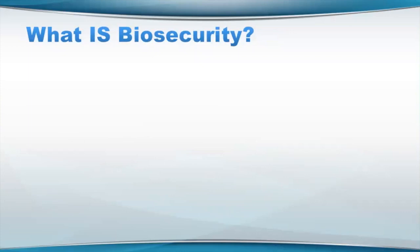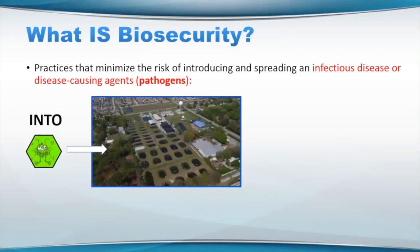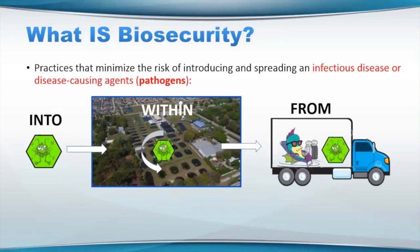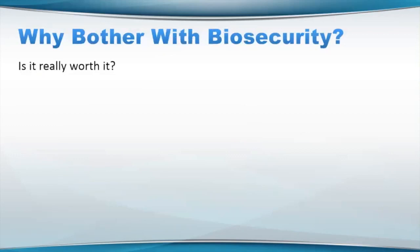So we've used the word biosecurity. What really is biosecurity in a big picture sense? Biosecurity refers to practices that minimize the risk of introduction and spreading of infectious disease or disease-causing agents — which we call pathogens — either into a farm or facility, within a farm or facility, or leaving from a farm or facility. Good biosecurity is really good added insurance against catastrophic disease events, but it's also really important for potential low level or moderate chronic losses, because good biosecurity will help prevent those — and those are things that will slowly eat away at your bottom line.